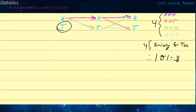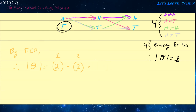With the Fundamental Counting Principle, you could get the same result. The number of total possible outcomes equals two — the number of outcomes for the first coin — multiplied by two for the second coin, multiplied by two for the third coin. That gives us two cubed, which is equal to eight.